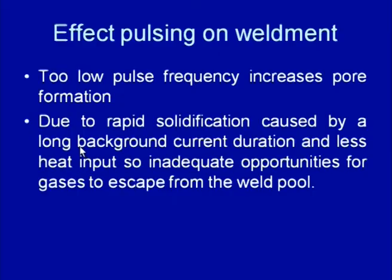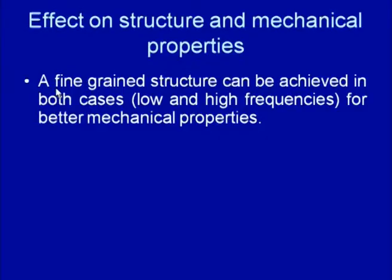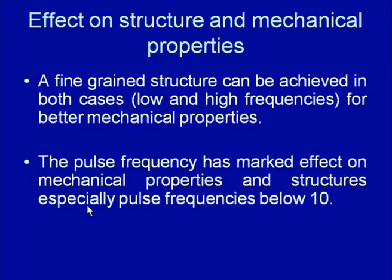Rapid solidification caused by long background current duration and low heat input under conditions of very low pulse frequency leads to inadequate opportunity for gases to escape from the weld pool, resulting in gaseous defects in the weld metal. The low pulse frequency also affects the structure and mechanical properties of the weld joint. A very fine-grained structure can be achieved both with low pulse frequency and excessively high pulse frequency. The pulse frequency has a marked effect on mechanical properties and structure, especially when the pulse frequency is below 10 Hz.